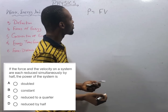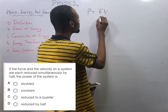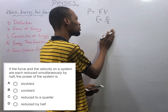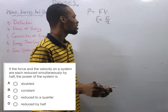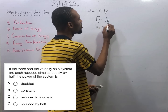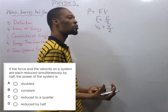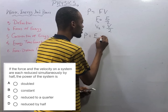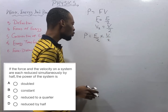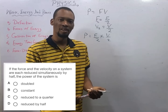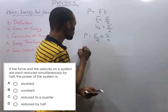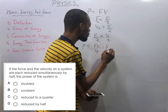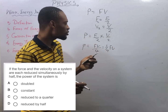If force is reduced by half, the new force is F over 2. If velocity is reduced by half, the new velocity is V over 2. Power becomes (F/2) times (V/2), which equals FV over 4 — that is one-quarter FV. So the power will be reduced to a quarter.